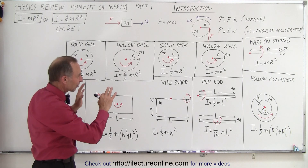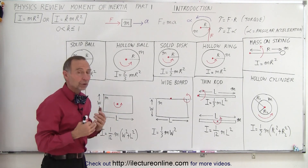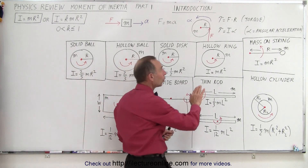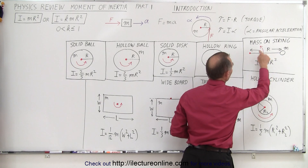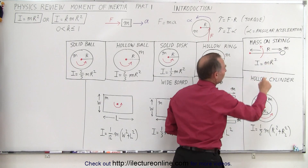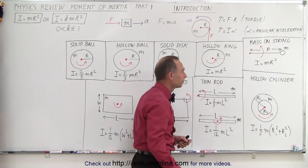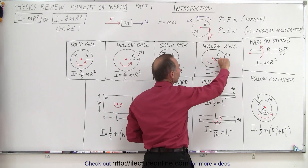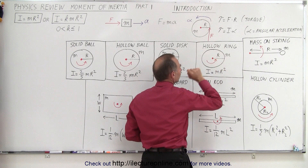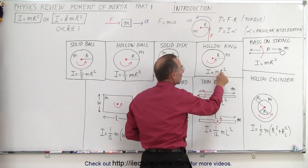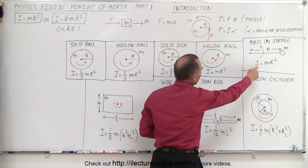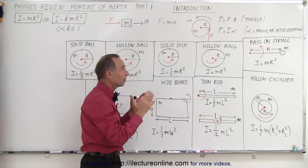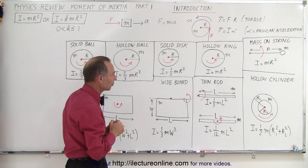Now we have some various objects on the board and we're going to look at each one of them and see what the moment of inertia is. In the case that all the mass is distributed at a distance r away from the point of rotation, it's mr squared. Here we have a hollow ring, which means all the mass is at distance r away from the point of rotation, so I equals mr squared. It makes no difference how the mass is distributed, as long as all of it is at a distance r away from the point of rotation.